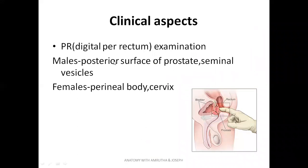Now, clinical aspects: the per rectal examination, that is digital per rectum. A finger can be introduced into the rectum to see and feel the nearby structures. In males, we can palpate the posterior surface of the prostate and the seminal vesicles because of their close proximity. In females, we can feel the perineal body and the cervix — the strength of the perineal body and the cervix can be assessed through digital per rectum examination.